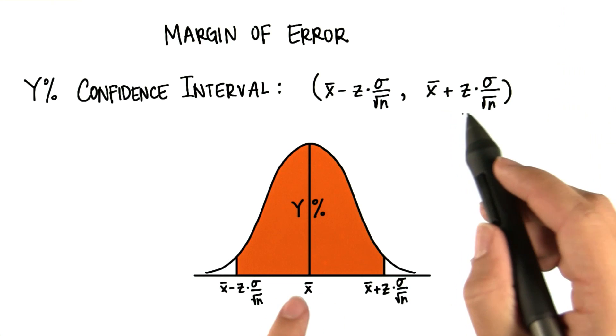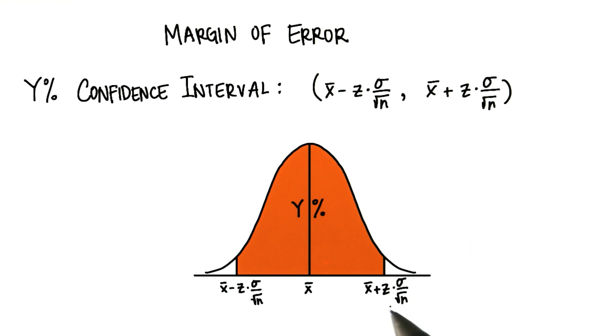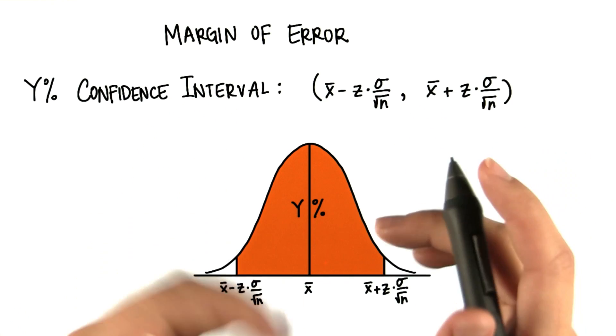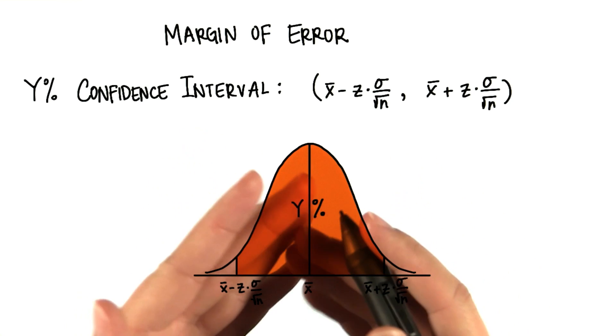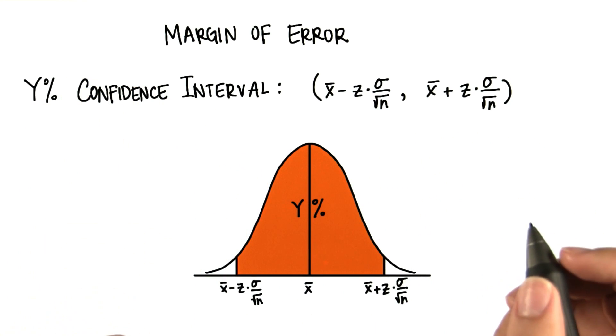And then on the upper bound, we just add the number of standard deviations away that we want. If we have a 95% confidence interval, we'll have less standard deviations away than we will for a 98% confidence interval.